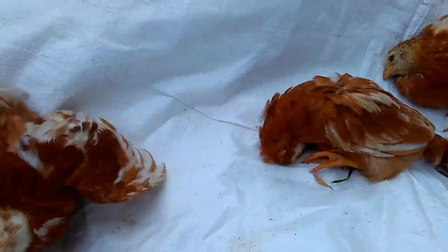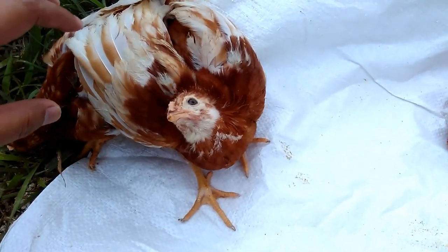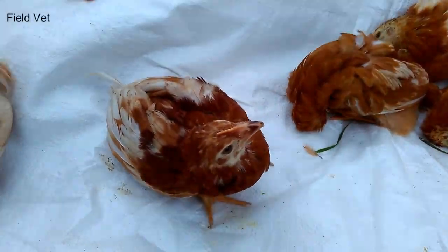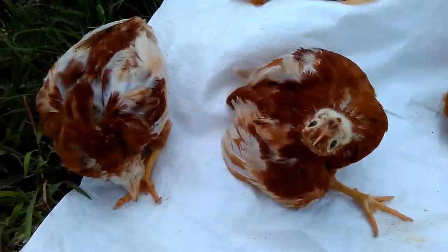Chicks have been vaccinated against Newcastle disease at the age of 1 day and 13 days of age. However, the disease still occurred. What happened?